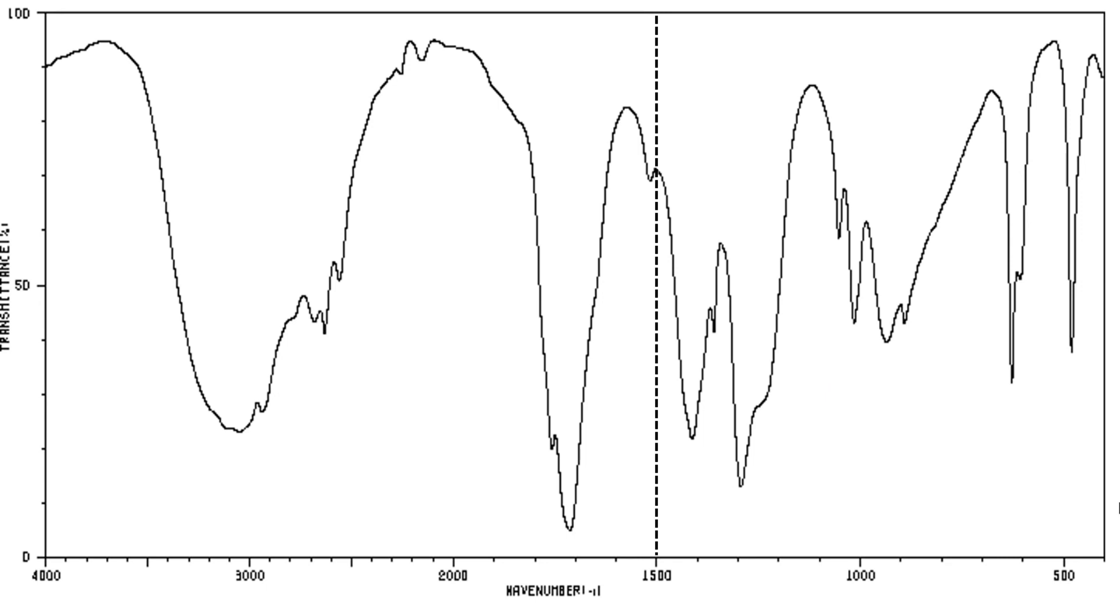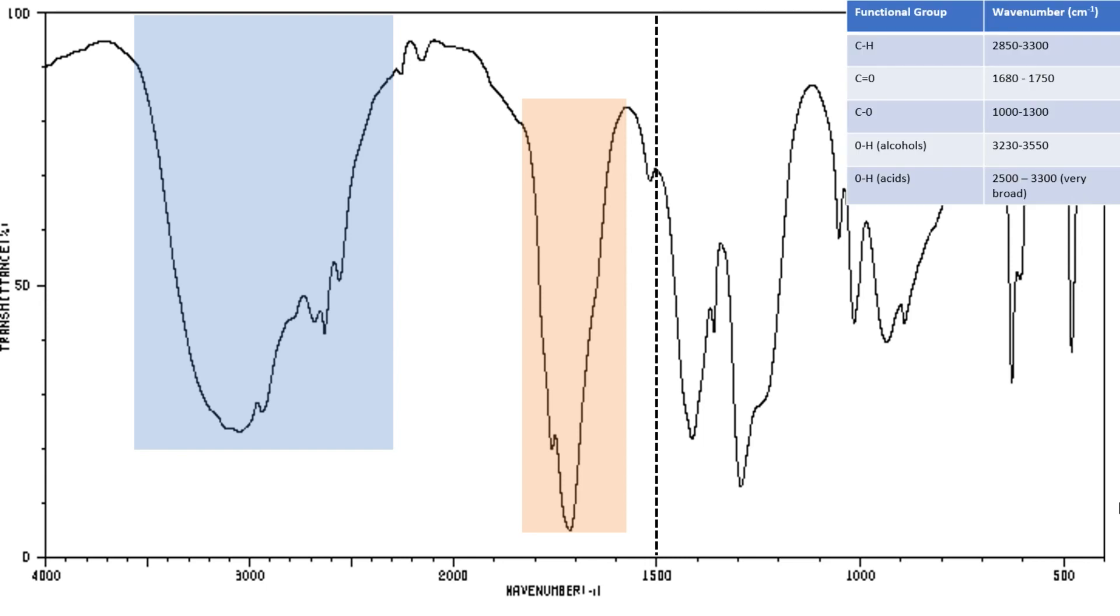When I start to do the analysis, I always draw a line at 1500 to help me work out which is the fingerprint region and which is the functional group region. Then we look in the functional group region, and we can see various peaks - there's a peak there, and there's a peak there. So we start interpreting and understanding what these peaks are actually telling us. This is where we refer back to the data that we had earlier.